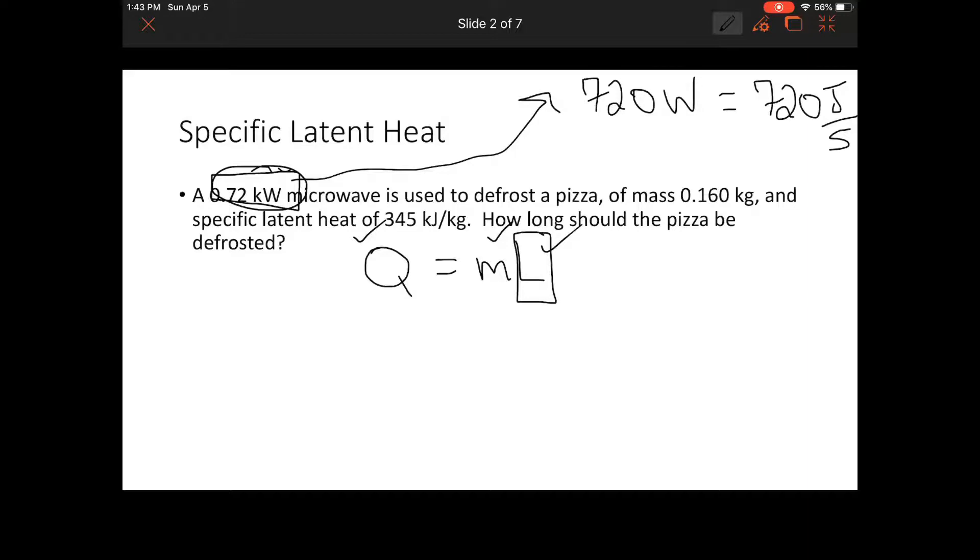So how much energy does that pizza need to absorb in order to defrost? Let's fill in what we know. We know that the pizza has a mass of 0.160 kg, and we have a value for L because we know how much energy would be required to defrost 1 kg. So that is how many kilojoules per 1 kg.